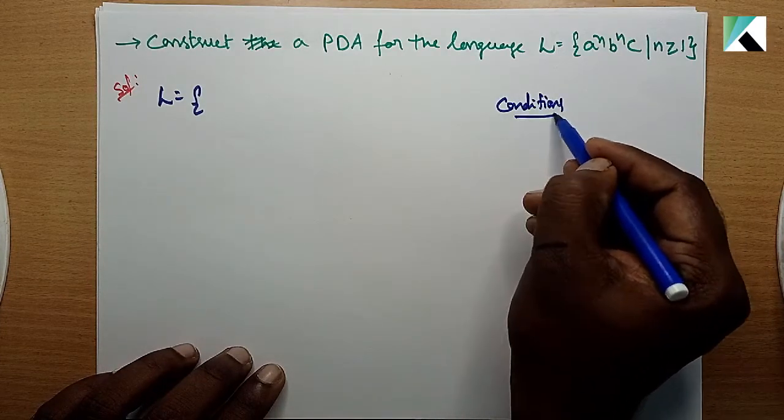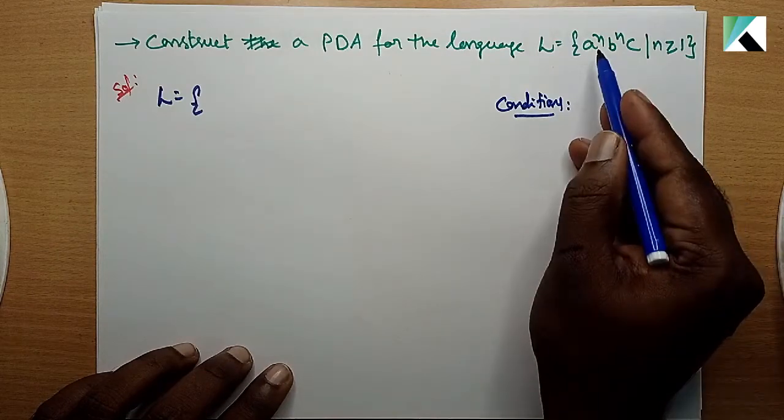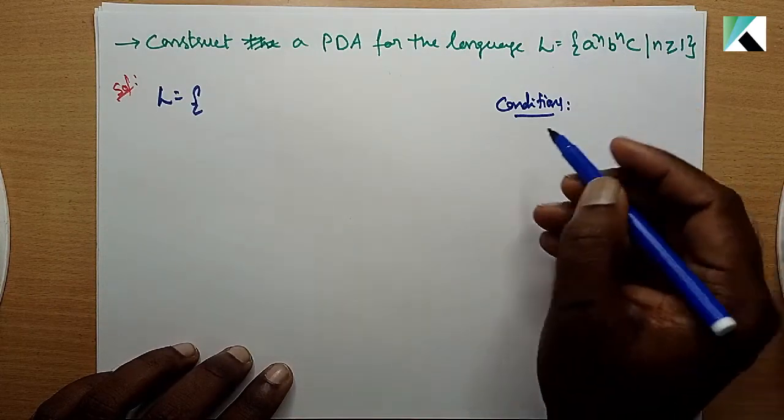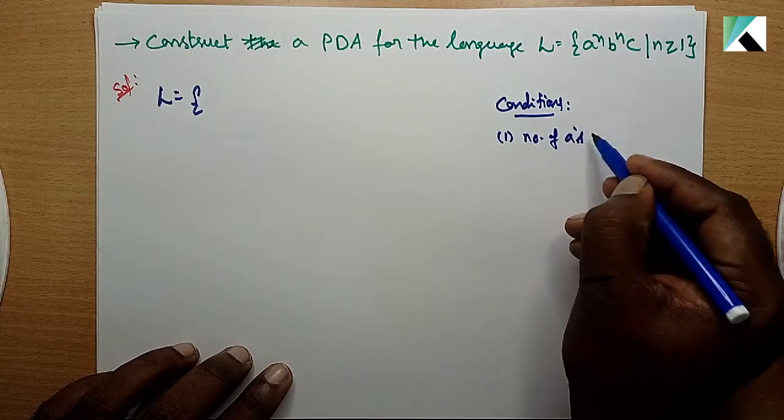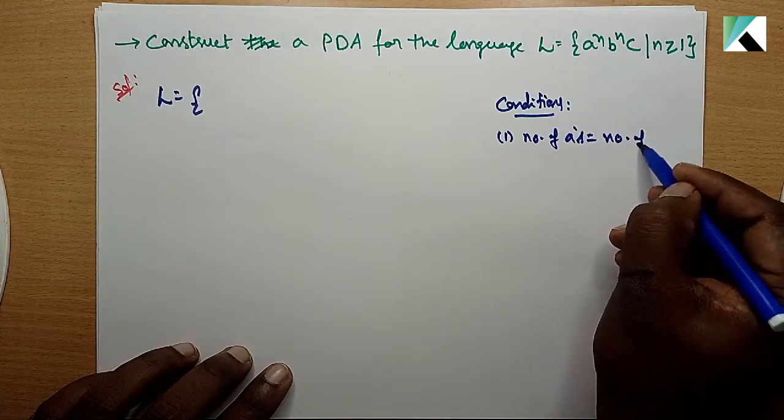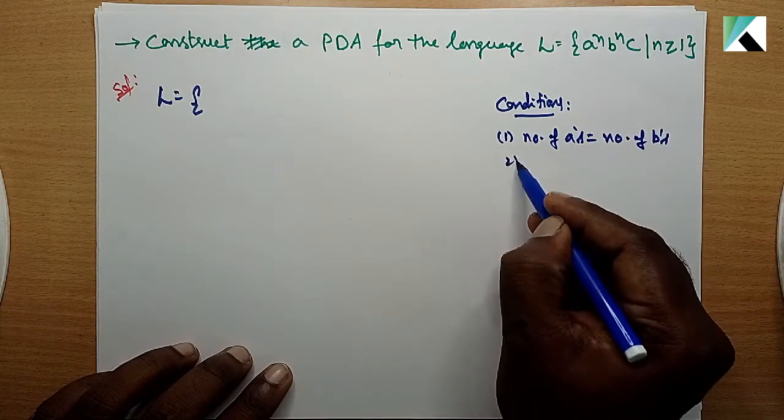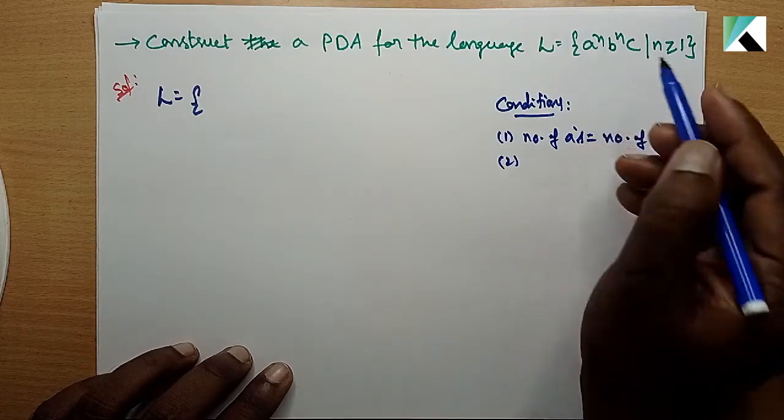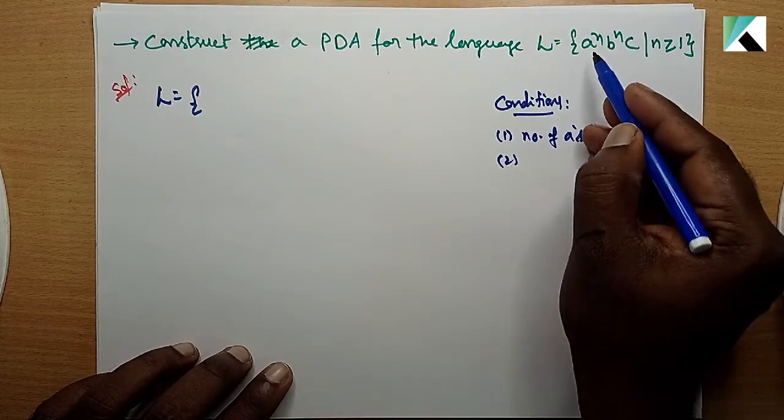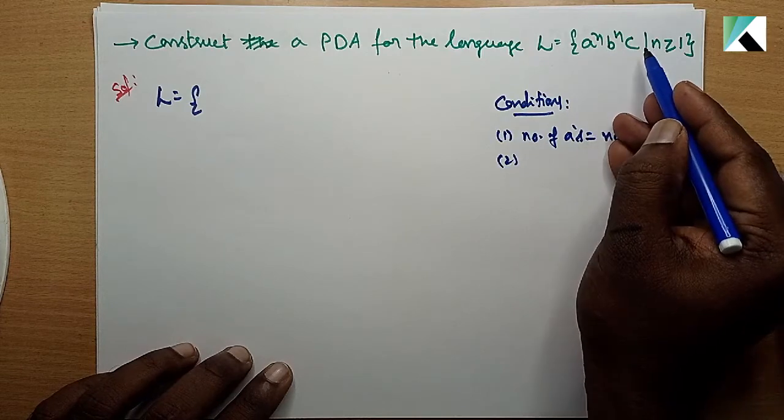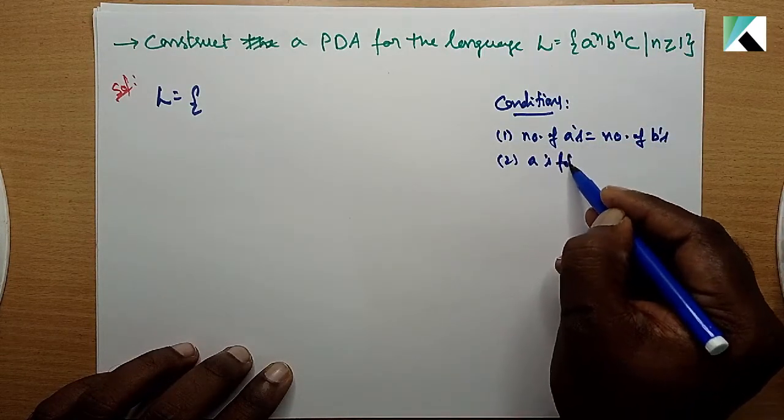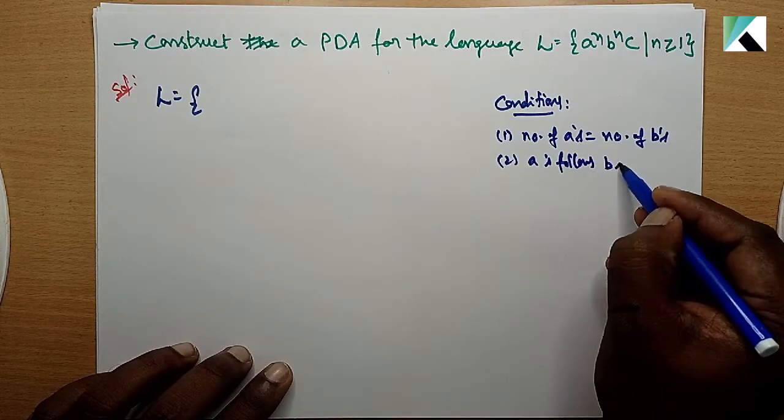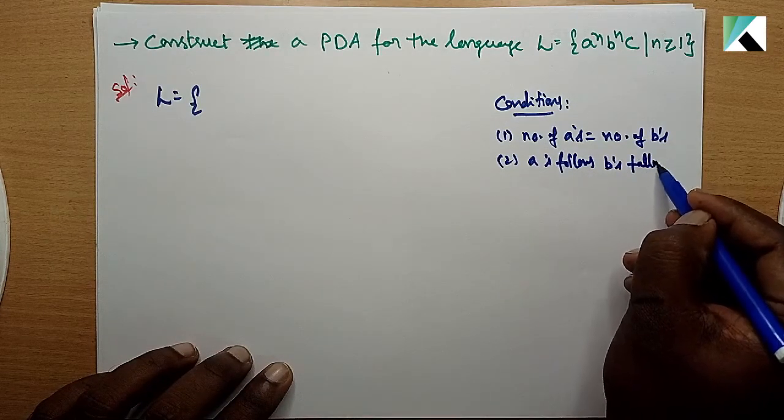What are the conditions in the language? First, equal number of A's equals to number of B's. Second, A's follow B's, B's follow C.